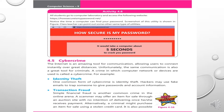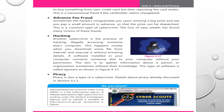Transaction Fraud. Some financial fraud is another common crime in the online arena. A scammer may offer an item for sale through an auction site with no intention of delivering once he or she receives payment. Alternatively, a criminal might purchase an item using a stolen credit card. It is also possible to buy something with your own credit card but then report the card stolen. This is a transaction fraud if the cardholder claims a chargeback.